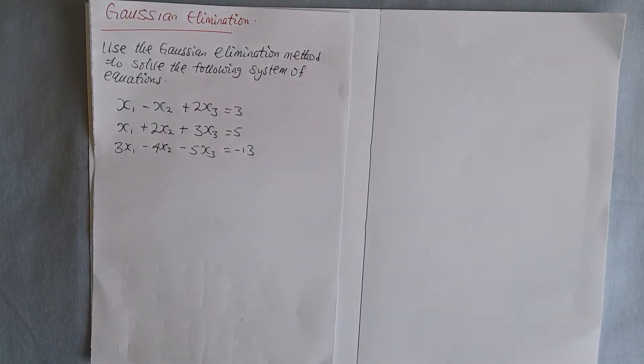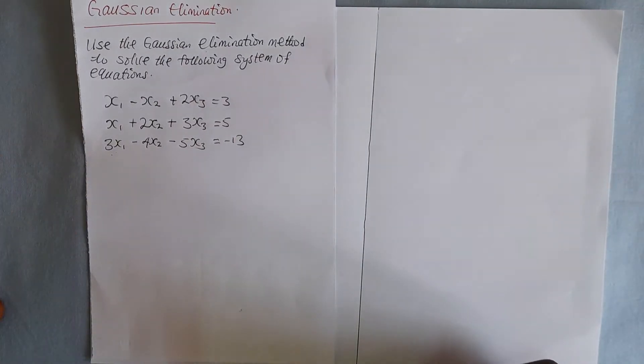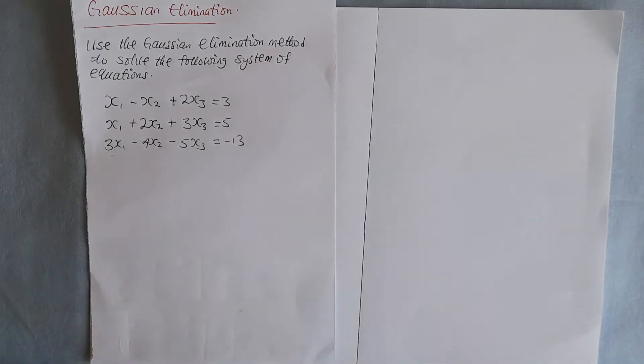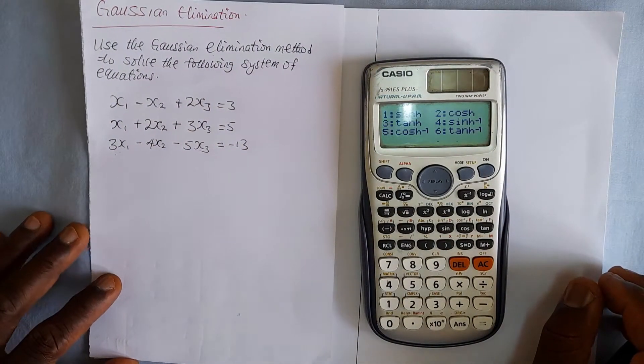Hello and welcome. Today we are going to be looking at the Gaussian Elimination Method of Solving Systems of Linear Equations with the help of a scientific calculator. The calculator we are going to use today is this Casio FX991ES+.